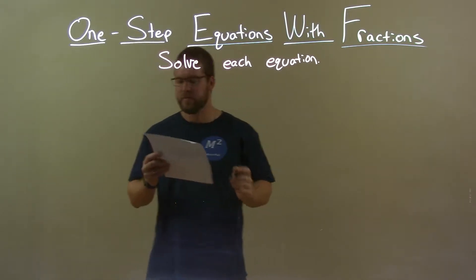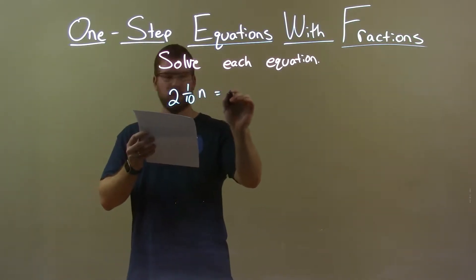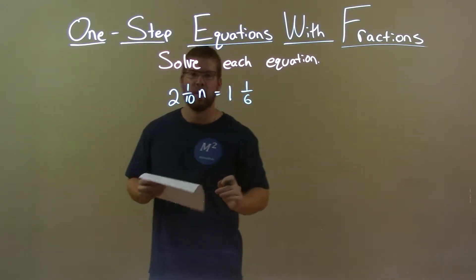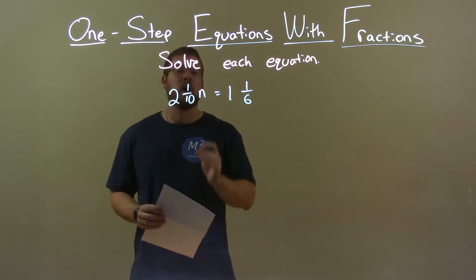If I was given this equation, 2 and 1 tenth n equals 1 and 1 sixth. Alright. Well, first thing I want to do, I'm going to convert this to an improper fraction.